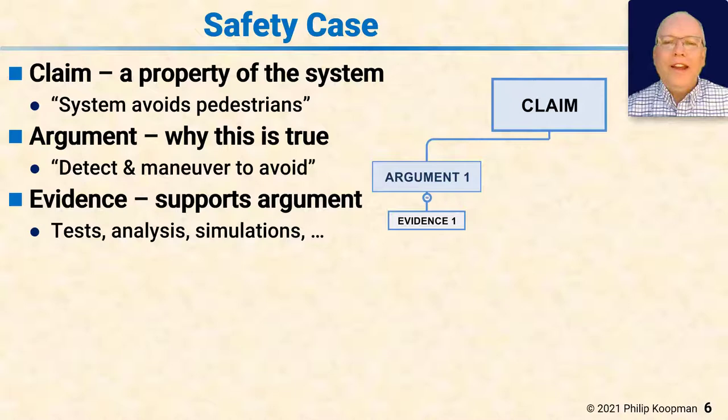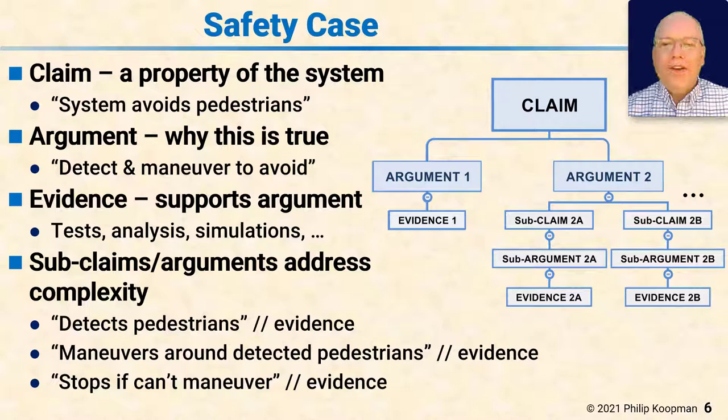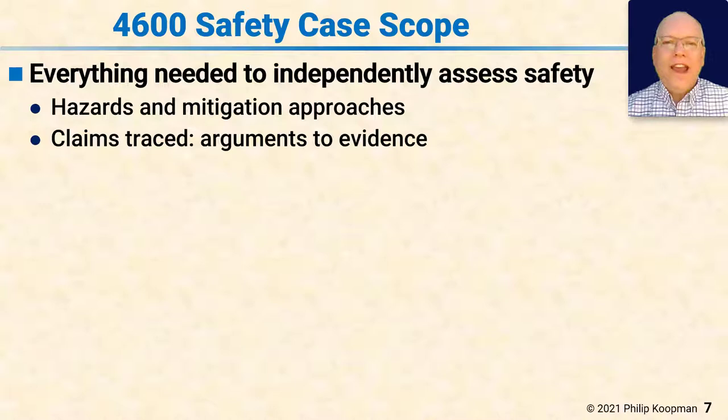A single claim with a bunch of flat arguments probably isn't going to work out. To manage complexity, there are typically subclaims. For example, an argument about avoiding pedestrians might break into: we detect pedestrians, we maneuver around detected pedestrians, and we stop if we can't maneuver. The scope of the safety case in 4600 is everything needed to independently assess safety — that means the safety case should have everything you need to decide the system is safe, including the hazards, the mitigation approaches, and all the arguments traced to evidence.